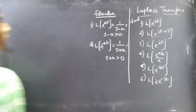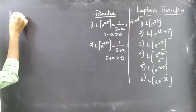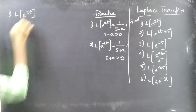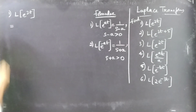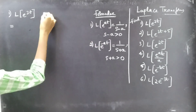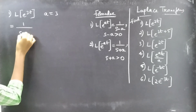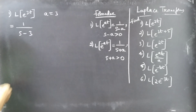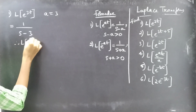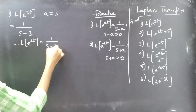Let's begin with the first one: find L{e^(3t)}. Compare this with e^(at), then for a = 3 we get 1/(s-3). Therefore L{e^(3t)} = 1/(s-3), for s-3 > 0.